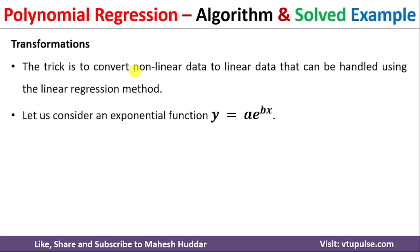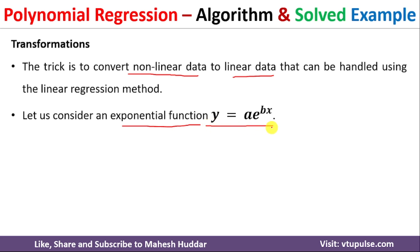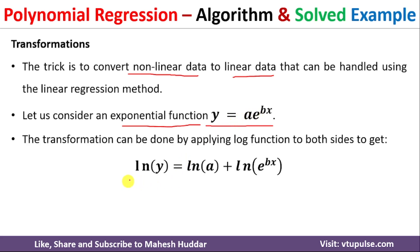Transformation is a process of converting nonlinear data into linear data. Let us say the data is exponentially distributed. The function for exponential distribution is y = a multiplied by e raised to bx. Because it is a nonlinear function, we cannot directly apply linear regression. To convert it, we apply ln on both sides — ln on the left side and ln on the right side.